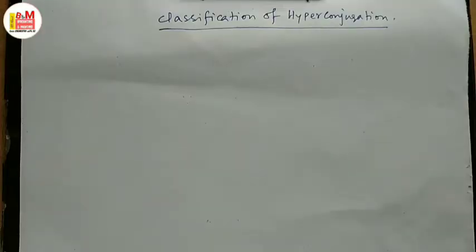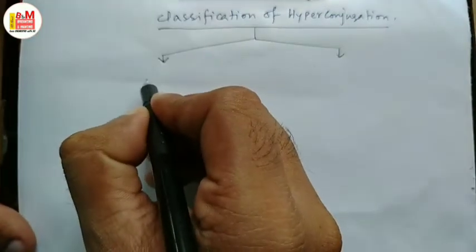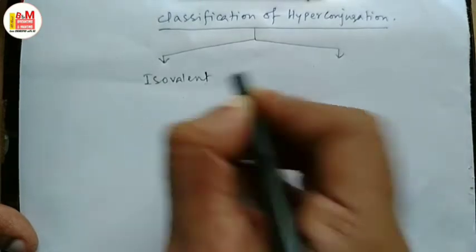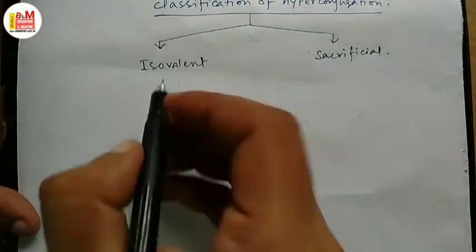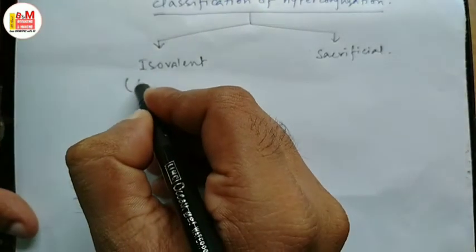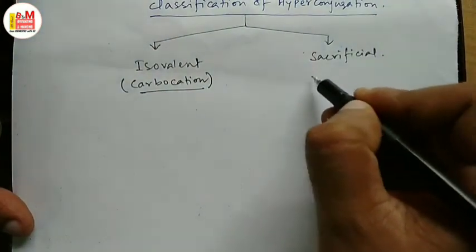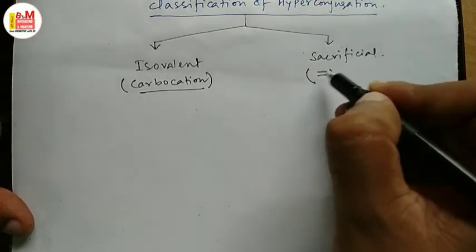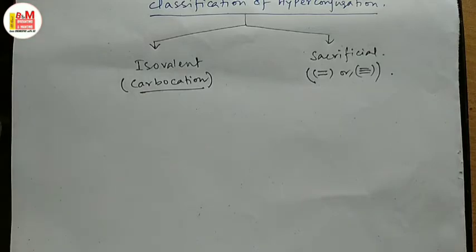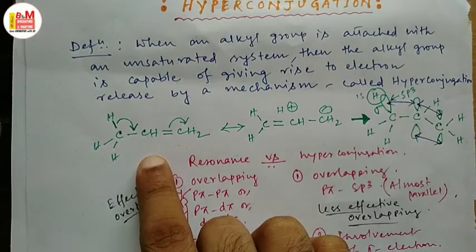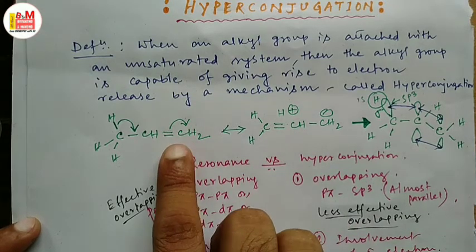We will discuss the classification of hyperconjugation. Hyperconjugation is of two types: one is isovalent and the other is sacrificial. In case of isovalent hyperconjugation, the unsaturated system is a carbocation. In case of sacrificial hyperconjugation, the unsaturated system may be a double bond or a triple bond. The example of sacrificial hyperconjugation we discussed before — where the unsaturated system is a double bond — is an example of sacrificial hyperconjugation. It can be a triple bond also.